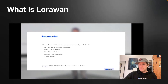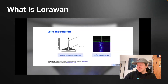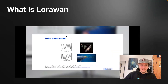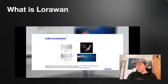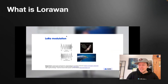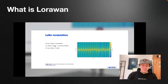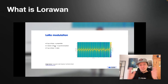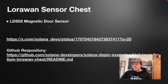It operates in the free sub-gigahertz frequency spectrum, and the modulation is quite interesting — it's kind of like what bats and dolphins do in nature, a chirping sound. Whenever the sensor wants to send something, it does 8 up-chirps and then 2 down-chirps, and then it's allowed to send its data to the hotspot. Now let's show you how this LoRaWAN sensor works.